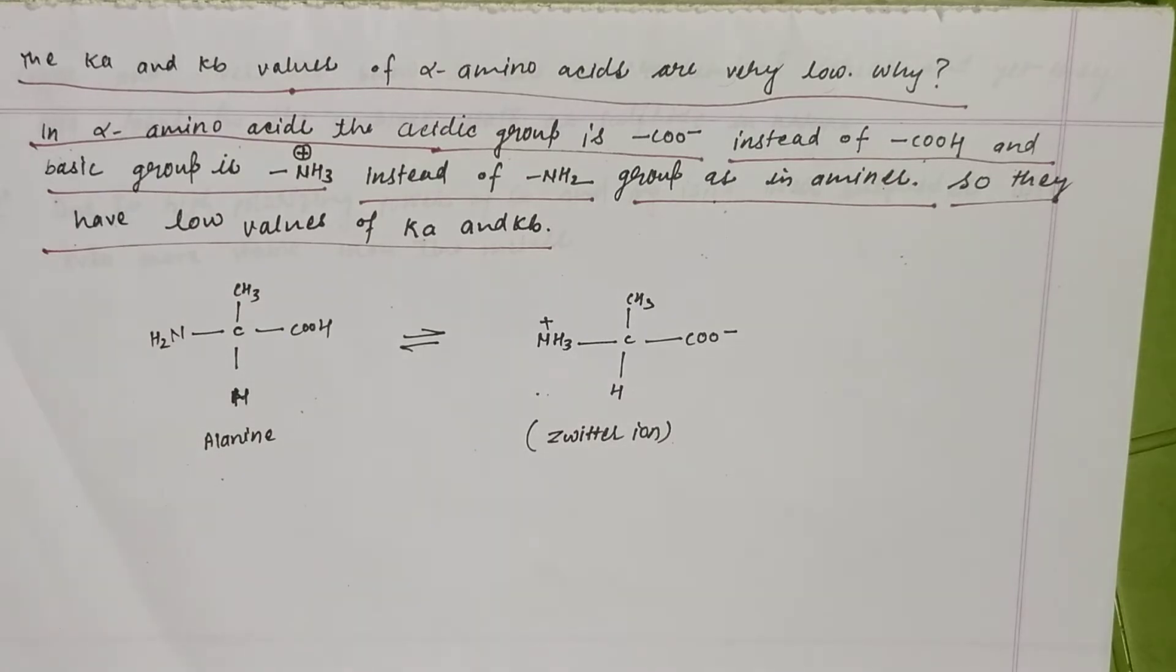The answer can also be written that neither acid group is there nor the base group is there. That is why the Ka and Kb values are less.